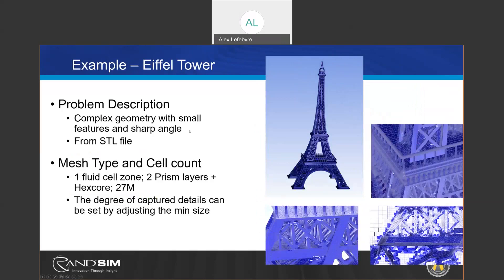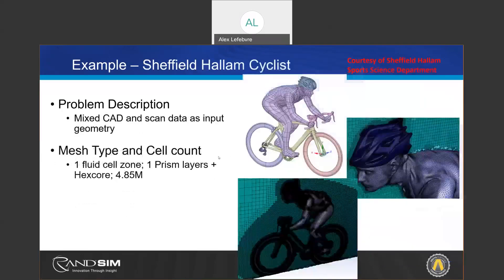Using this technology, here is an example using poly tet and hex core: you can capture all the features within the Eiffel Tower using 27 million cells — that's pretty incredible. With poly prism and hex core you may even go to a lower cell count. Similarly, with tet prism and hex core you can capture a cyclist in great detail, including all the details of the helmet, with the tet layer transitioning into the hex core mesh.